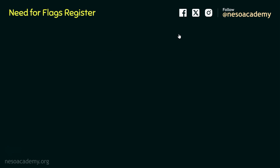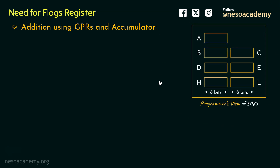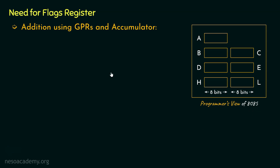We are going to understand the need for the flags register with the help of an example. For this we are going to perform an addition using the general purpose registers (GPRs) and the accumulator. We are going to need the programmer's view of 8085. This particular programmer's view of 8085 is yet to be completed — we will keep adding the different registers accessible and available for programmers so they can build efficient programs for the 8085 microprocessor. We are about to perform the addition of two 8-bit binary numbers, or in other words two two-digit hexadecimal numbers, using the accumulator and one of the general purpose registers.